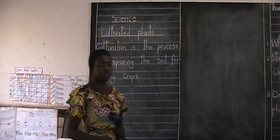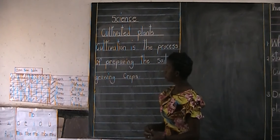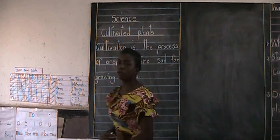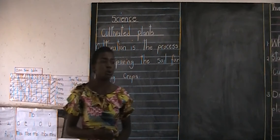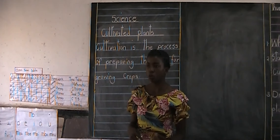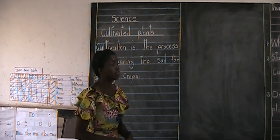Cultivation is the process of preparing the soil for growing crops. So we prepare the soil so that we can grow different types of crops. Now since we have looked at what the word cultivation means, I want you to tell me different types of garden crops that you know — different types of cultivated plants that you even plant at home when you prepare the soil.